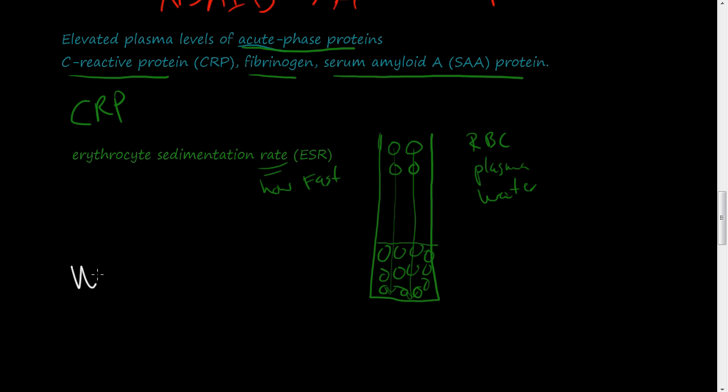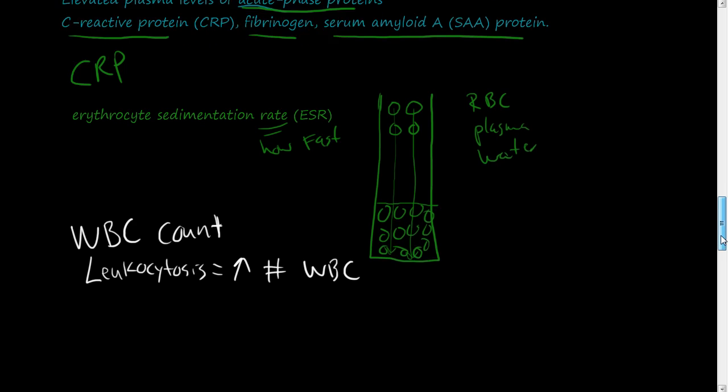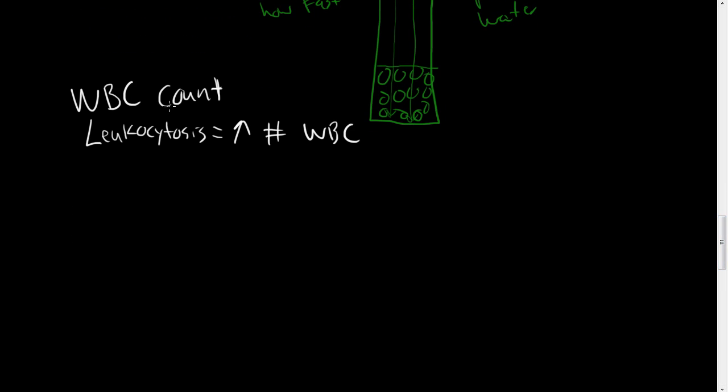Another thing that a doctor might order is want to know your white blood cell count, and a white blood cell count, because we've talked about these acute inflammations and chronic inflammation, and these blood cells that are involved in the process, well, they might draw your blood and want to know your white blood cell count, and you might have leukocytosis, which means increase in the number of white blood cells. So, let me scroll down here, so if you have a white blood cell count, and the blood work comes back and say you have leukocytosis, that means you have an increase in the white blood cells.